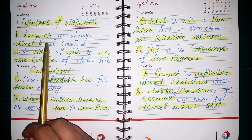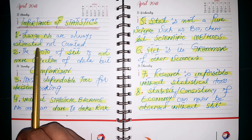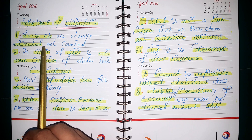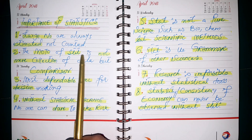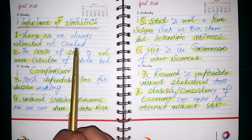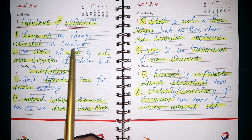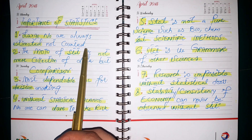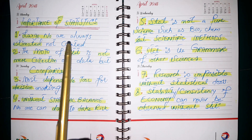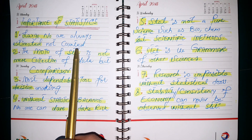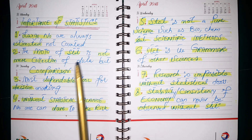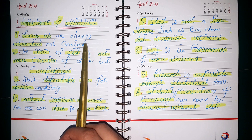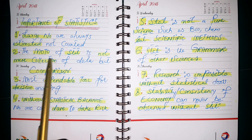Large numbers are always estimated, not counted. Large numbers को हम हमेशा estimate करते हैं, count नहीं करते। जब populations infinite हो जाती है, inaccessible होती है, out of range हो जाती है, तो वहाँ पर हम estimation करते हैं। और estimation statistics के बिना नहीं कर सकते। Statistics के इलावा कोई ऐसा subject नहीं है जो estimation की permission देता हो।